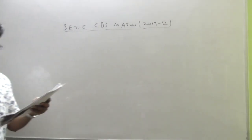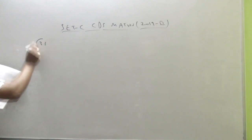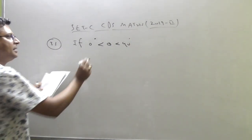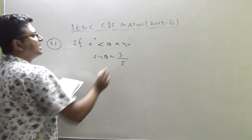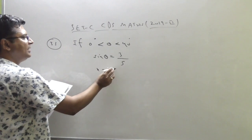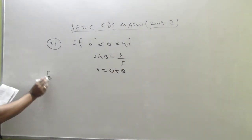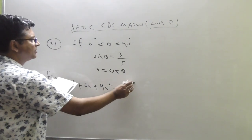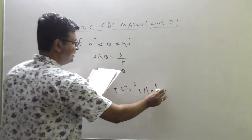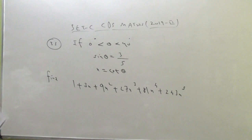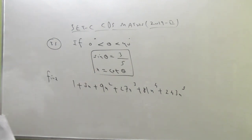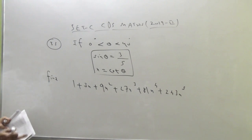Let's take a question from trigonometry — question number 33. It seemed difficult but is actually very easy. The question says: angle θ lies between 0° and 90°, with sin θ = 3/5 and X = cot θ. Find the value of 1 + 3X + 9X² + 27X³ + 81X⁴ + 243X⁵. Two approaches: put the value of X in each term, or recognize a formula. If you look carefully, you can write the first four terms as (1 + 3X)³.